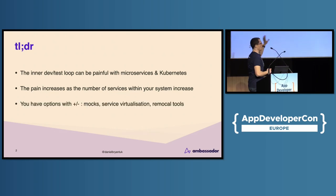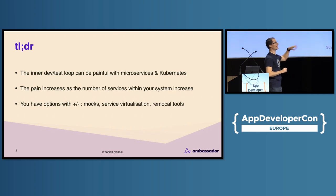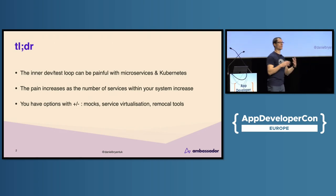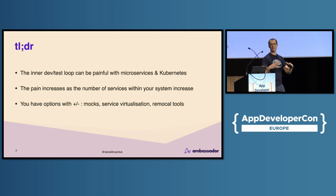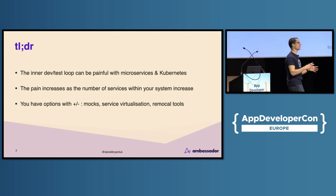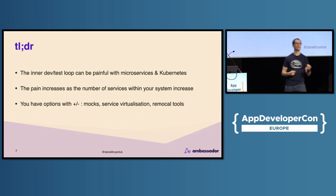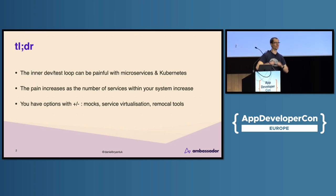You have options. This is the high-level meta takeaway. Early on in my career, I didn't fully understand how many things were out there — techniques, patterns, tools. Based on feedback from my mentors, I made it a mission to learn about these things. So know you have options when you are testing: mocking, service virtualization, and we're also going to look at some remote-local tooling.